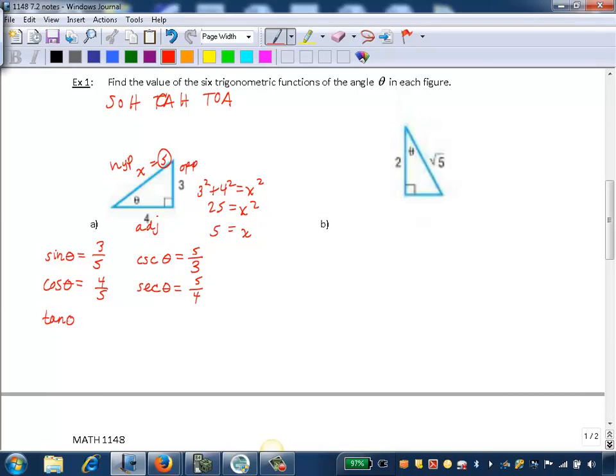Finally, tangent theta. If we look at SOH-CAH-TOA, our TOA here, opposite over adjacent. In this case, that gives me 3 fourths. The reciprocal of tangent is cotangent, so the reciprocal of 3 fourths gives me 4 thirds.